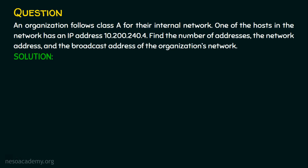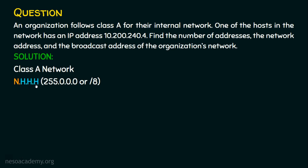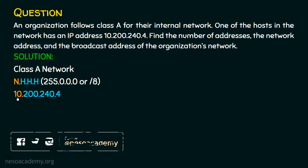It is a class A network, and in class A, out of four octets in the IP address, the first octet represents the network. So in 10.200.240.4, the value 10 alone is the network portion — N.H.H.H, where the first octet is network and the remaining three are host. The default subnet mask is 255.0.0.0, also represented as /8, because there are only eight ones in the subnet mask, all in the first octet. So anything starting with 10 in that organization belongs to its own network.